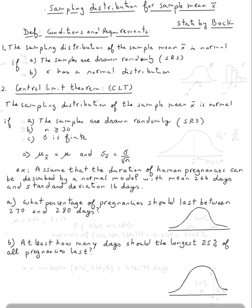The topic is sampling distribution for sample mean x̄. The first definition states the condition and requirement: the sampling distribution of the sample mean x̄ is normal if the samples are drawn randomly — we call that SRS — and x has a normal distribution.